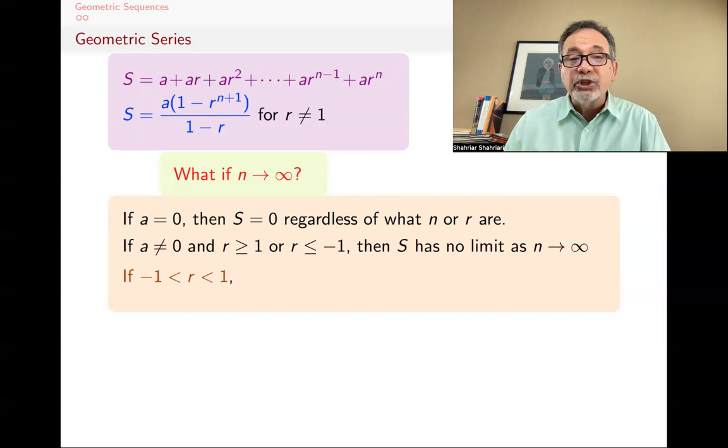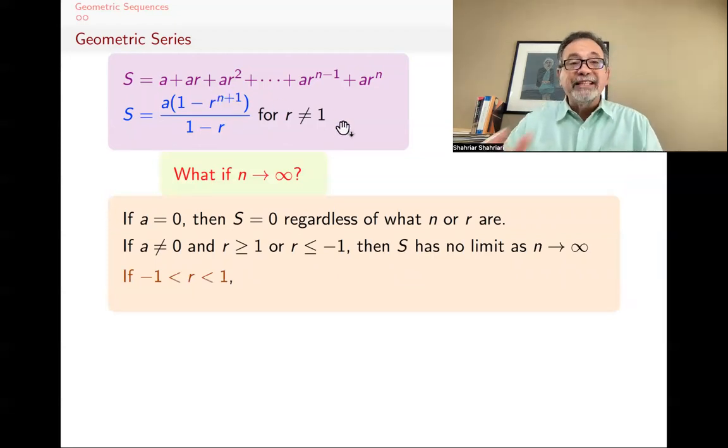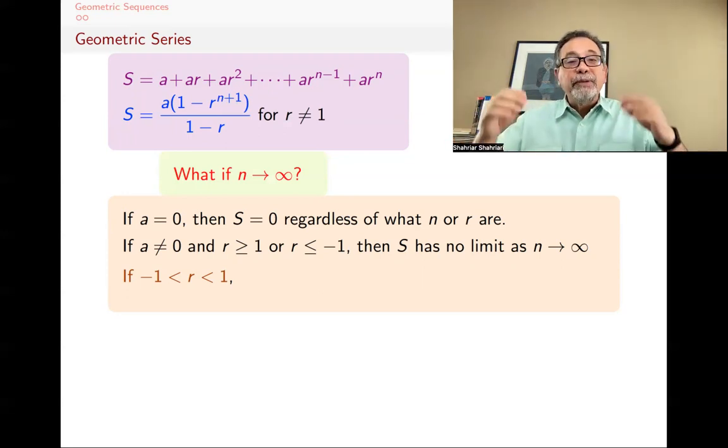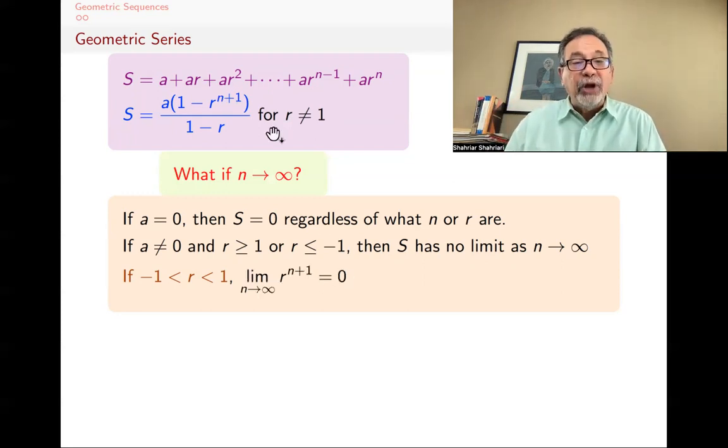But if R is between -1 and 1, then when you look at the formula that we got, this part, R^(n+1), that's the partial sum of the series, is that R^(n+1). If R is between -1 and 1, and if you raise it to a power, it becomes smaller and smaller. Like you think of it, if you have 1/2, 1/3, or -1/10, and if you keep raising it to a power, it becomes smaller and smaller and smaller. And so the limit of that is 0.